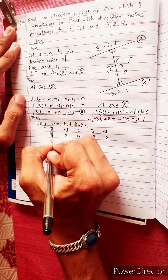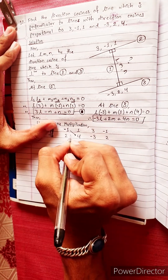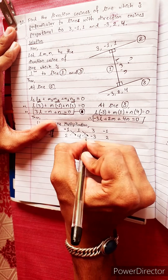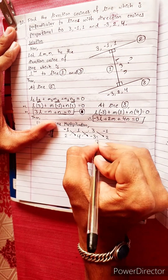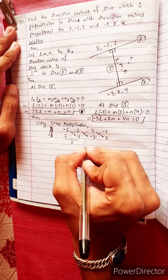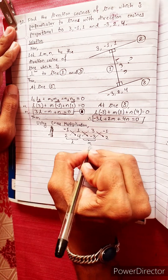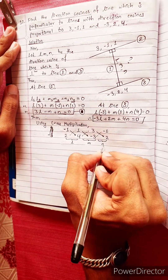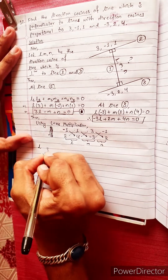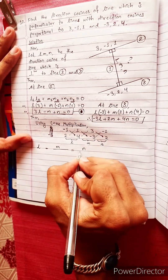Applying the sign pattern: plus, minus, plus, minus, plus, minus. This gives us L, then M, then N. So L equals M equals N.